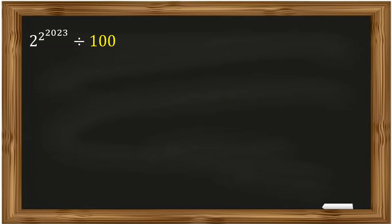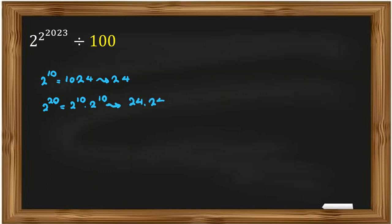Because it's 2 to the power of something, let's consider for example 2 to the 10. We know it is 1024, so the last two digits is 24. If we consider 2 to the 20, it is 2 to the 10 times 2 to the 10, and the last two digits is 24 times 24, which is 576, so it is 76.